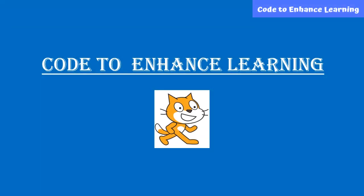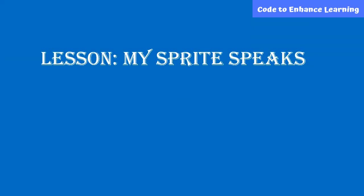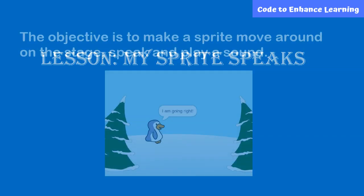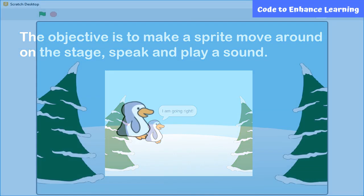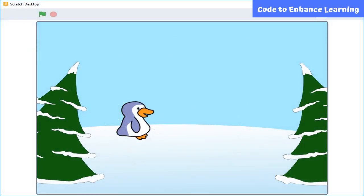Welcome to the Code to Enhanced Learning video series to learn coding. Let's start with the lesson: My Sprite Speaks. The objective is to make a sprite move around on the stage, speak and play a sound. Before starting, let's see a preview.